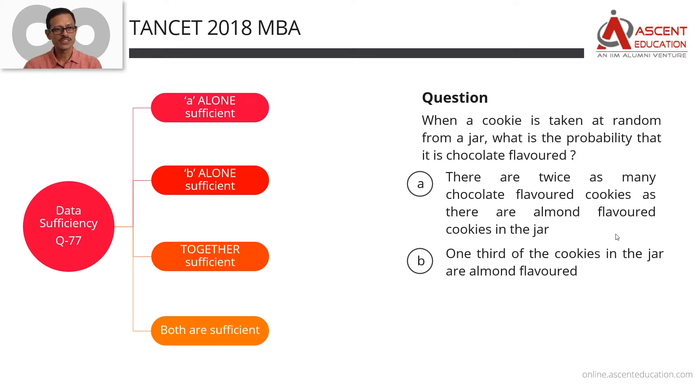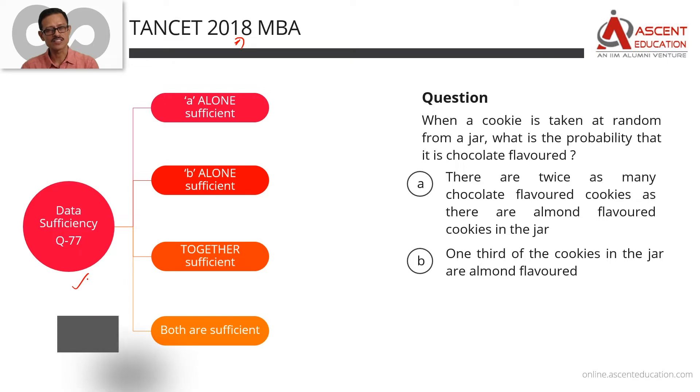TANCET Previous Year Paper, Video Solution. TANCET 2018 MBA Paper, Question No. 77, Data Sufficiency Question.